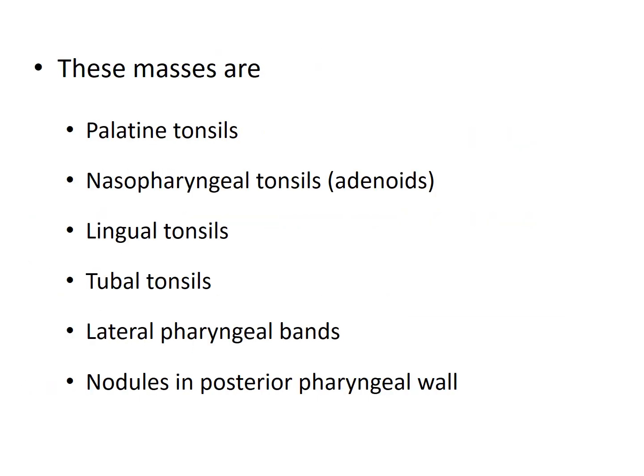These masses are the palatine tonsils, nasopharyngeal tonsils also known as the adenoids, lingual tonsils, tubal tonsils, lateral pharyngeal bands, and the nodules in the posterior pharyngeal wall.